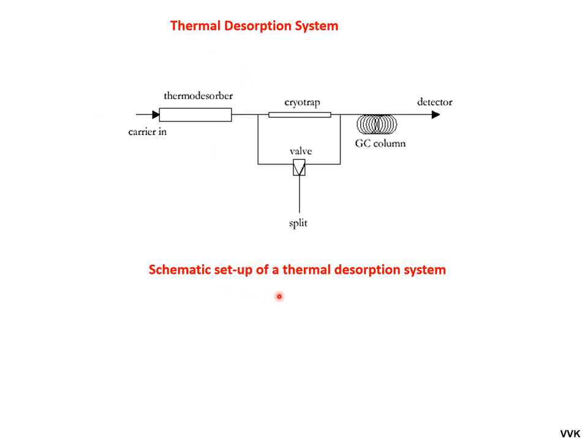The schematic of the thermal desorption system includes a thermodesorber, cryotrap, GC column, and detector. In the thermodesorber, analytes are thermally released and transported to the cryotrap. Cryogenic cold trapping is used to narrow the bands and improve detection limits. Nitrogen gas or Peltier cooling is used to decrease the temperature. Temperature programming is then done to release the condensed VOCs, which enter the GC column and are detected.